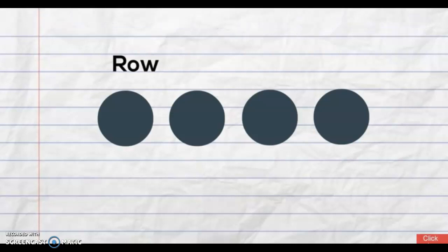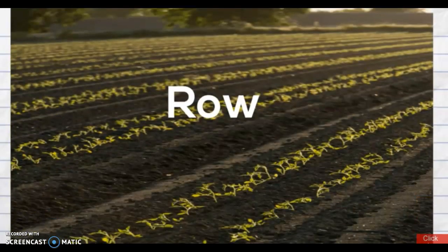A row is horizontal. Just like on a farm, a row of crops is horizontal and moves from left to right.